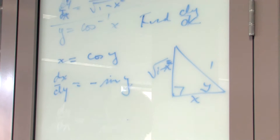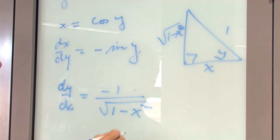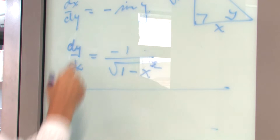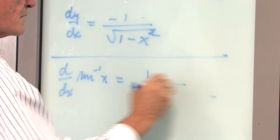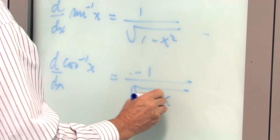So dx/dy becomes dy/dx, and that equals minus 1 over the square root of 1 minus x squared. Interestingly, the derivative of arcsin(x) equals 1 over the square root of 1 minus x squared, while the derivative of arccos(x) with respect to x equals minus 1 over the square root of 1 minus x squared. Notice the difference between these two.